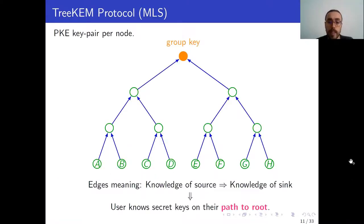TreeKEM uses a binary tree where users are associated to the leaves. So each user has an associated leaf, and each node in the tree has an associated secret public key pair. And the edges in this tree mean that the knowledge of the secret key of the source node implies the knowledge of the secret key of the sink node. So in particular, a user knows the secret keys on their path to the root. And indeed, it is this, the key associated to this root, also called the group key, that will later be used to derive keys that will be used to encrypt the text messages in the group. So everyone needs to have access to this and agree on it.